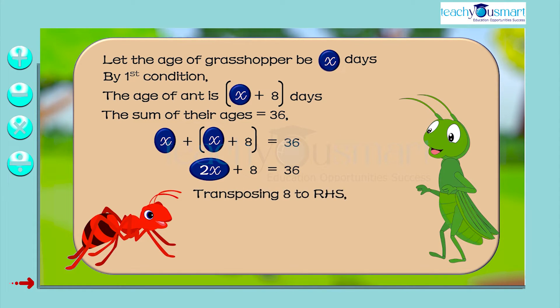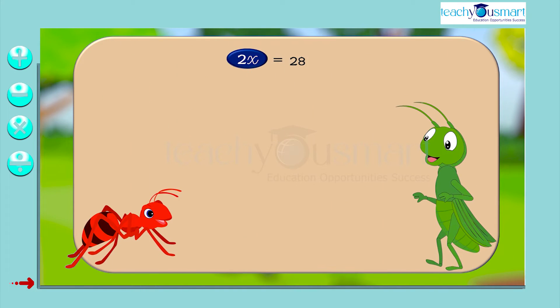Transposing 8 to RHS, 2x equals 36 minus 8 equals 28. That is, 2x equals 28. Transposing 2 from 2x to RHS and dividing RHS by 2. That is, x equals 28 by 2. We get x equals 14.